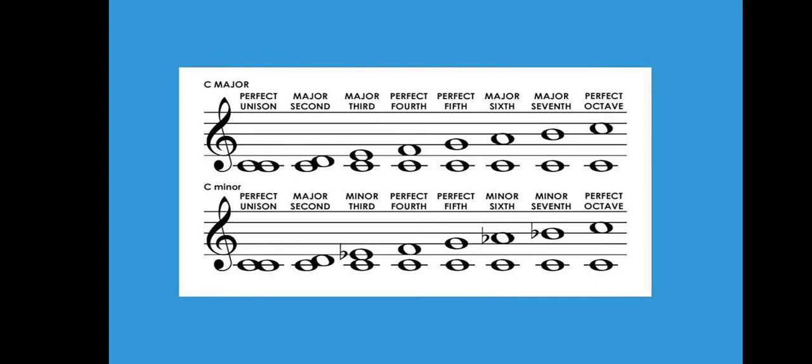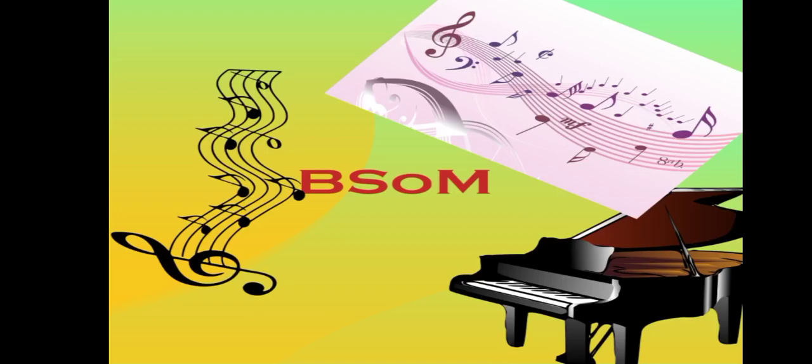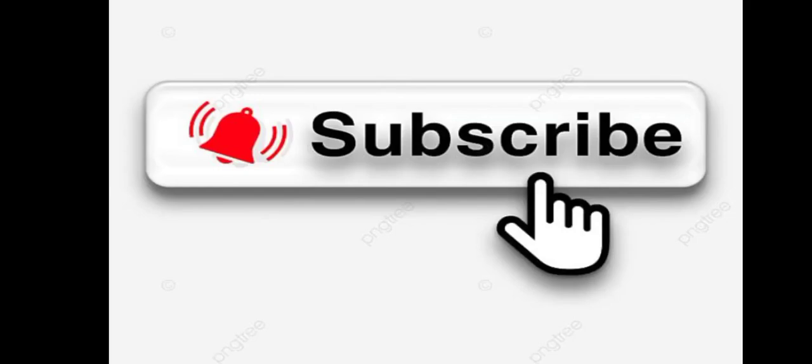I'm excited to announce that we have journeyed from the beginning to the end of this lesson. To remind you: there is a major interval, minor interval, perfect interval, augmented interval, and diminished interval. There are symbols for these: major takes capital M, minor takes small m, perfect takes capital P, augmented takes capital A or a plus sign, and diminished takes the abbreviation 'dim' or a degree symbol. I'm happy having you on board at Brahmo School of Music. Please give a thumbs up, subscribe, and turn on your notification bell for new content.